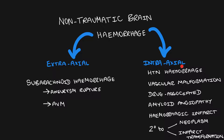Looking at intra-axial bleeds, there are various causes including hypertensive haemorrhage, vascular malformation, drug-associated such as cocaine, amyloid angiopathy, haemorrhagic infarcts usually due to venous sinus thromboses, and also secondary causes due to either an underlying neoplasm or transformation of an infarct.